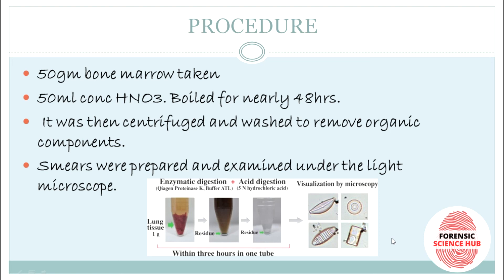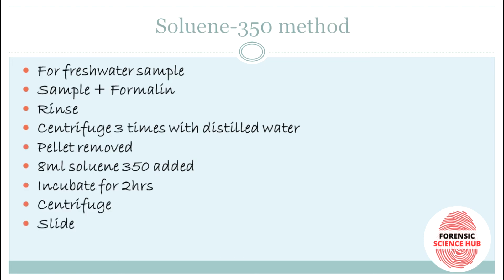There is another test called the Soluene-350 method, used for fresh water samples. A sample is taken, formalin is added, and it is rinsed. It is then centrifuged three times with distilled water and the pellet is collected. Then 8 ml of Soluene-350 solution is added, it is incubated for two hours, centrifugation is done, and it is then viewed on a slide to identify the types of diatoms present.